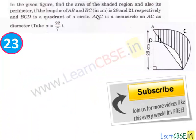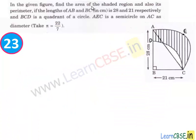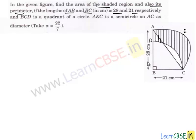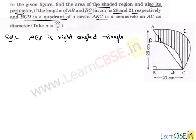In this question, we are given a figure and we have to find the area of the shaded region and its perimeter. The lengths of sides AB and BC are 28 cm and 21 cm respectively. BCD is a quadrant of a circle, and AC is a semicircle with AC as diameter. We have a right-angle triangle ABC, with two known sides and the hypotenuse unknown, which is also the diameter of semicircle AEC.